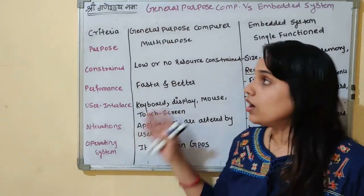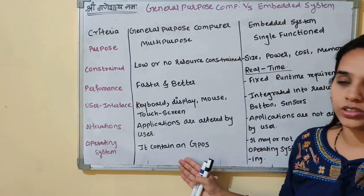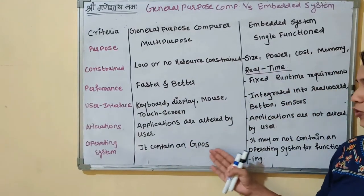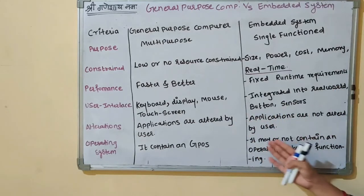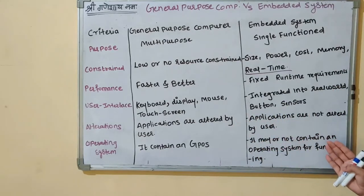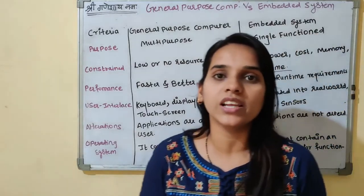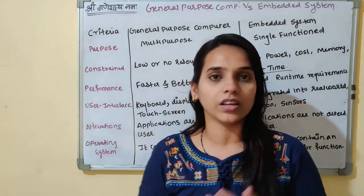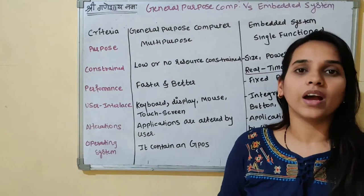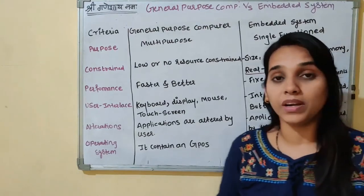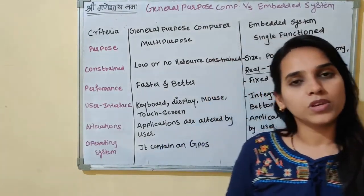Next is the operating system. A general-purpose computer contains a GPOS — General Purpose Operating System. Whereas in embedded systems, it may or may not contain an operating system. For small-scale embedded systems, there is no operating system — for example, an electronic toy. But for medium-scale and large-scale embedded systems, there is an operating system.